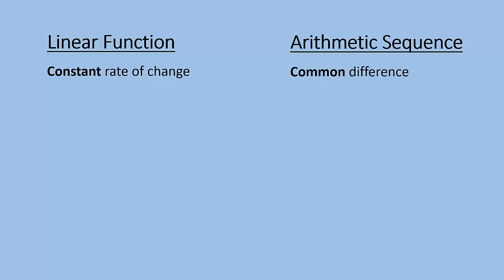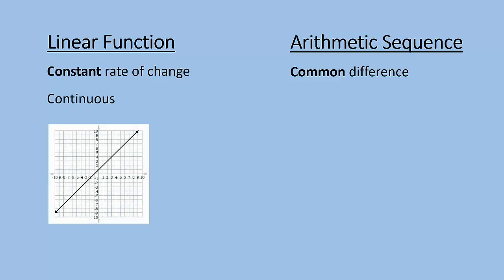They are basically the same thing with one big difference. A linear function is a continuous relationship, meaning that if you were to graph it it would have an infinite set of points that could be connected and you would get a nice line just like this graph shows.